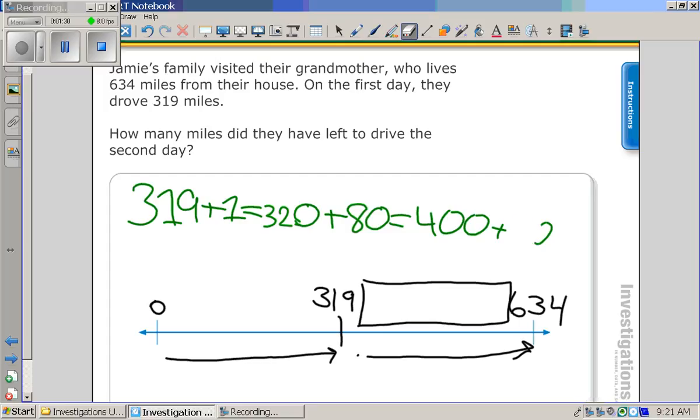Let's erase this. So I want to get to 600, how much do I have to add to get to 600? I'm at 400. 200, so let's add 200.